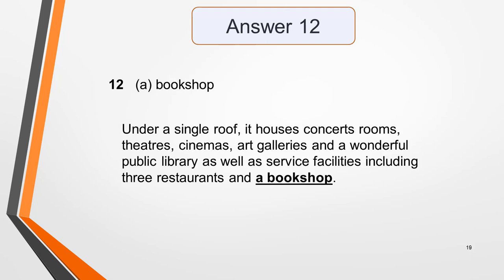Answer 12 is 'bookshop' or 'a bookshop.' Here's the sentence: 'Under a single roof it houses concert rooms, theaters, cinemas, art galleries and a wonderful public library, as well as service facilities including three restaurants and a bookshop.' This is an easy answer to identify as the facilities are listed in the same order as they appear in the questions, with the missing item — a bookshop — added onto the end.